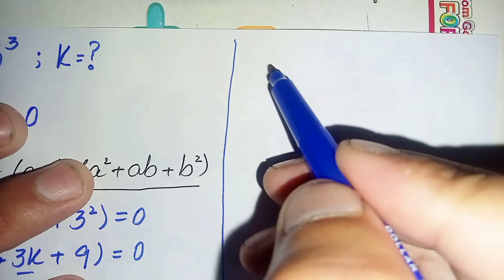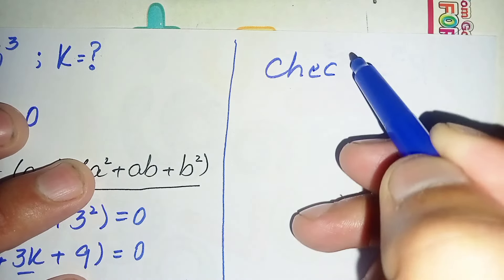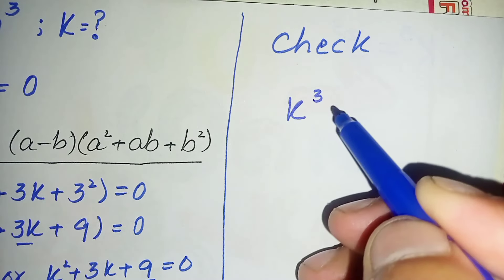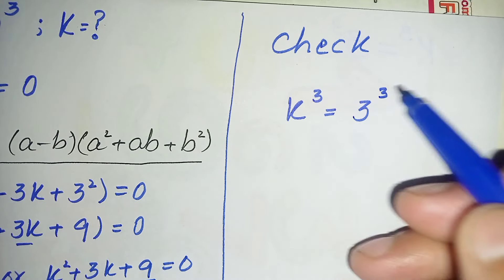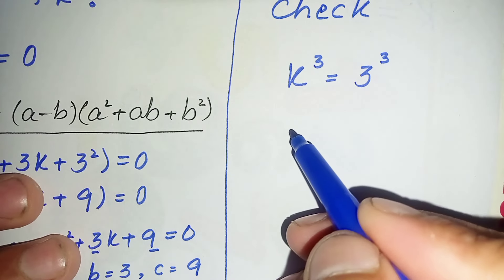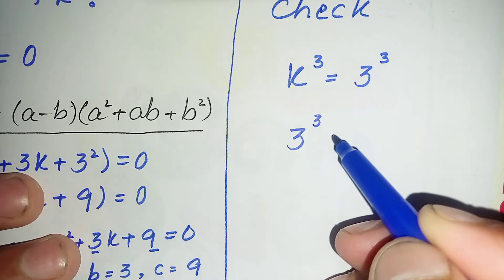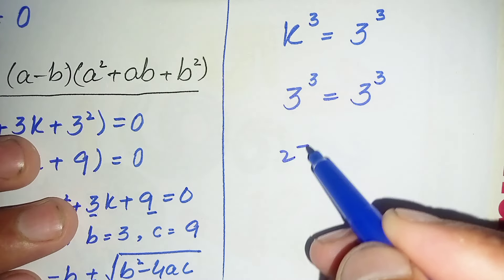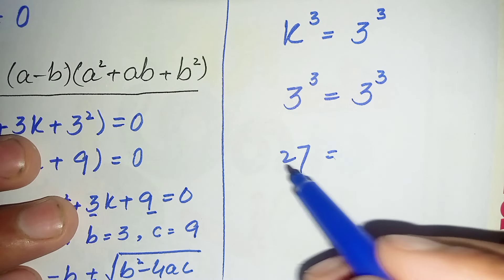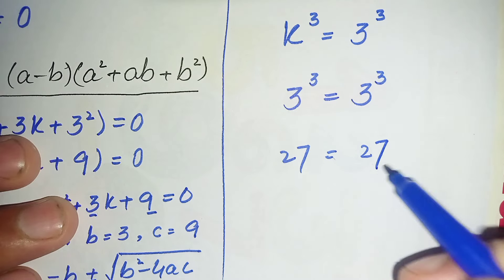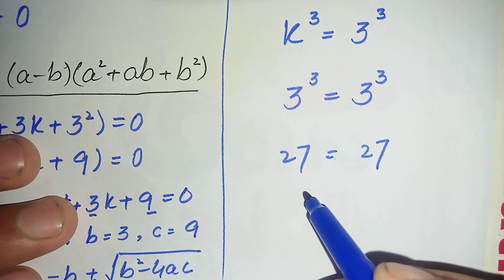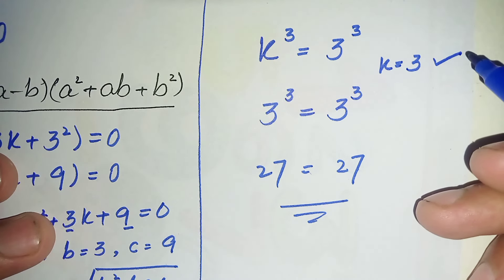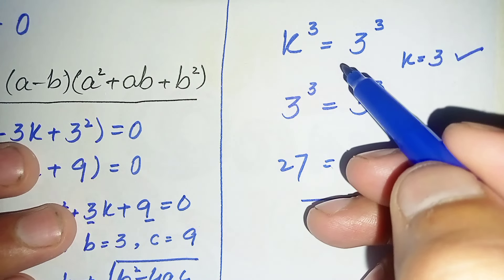To verify, we rewrite the original cubic equation: k cubed equals 3 cubed. Substituting k equals 3: 3 cubed equals 3 cubed. Now 3 cubed is 27, so 27 equals 27. Since both sides are equal, k equals 3 is confirmed as the real and exact solution of this cubic equation.